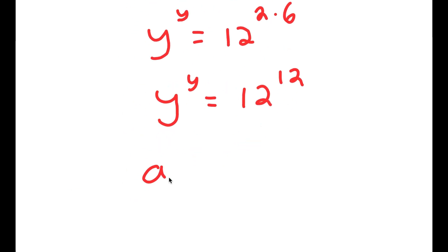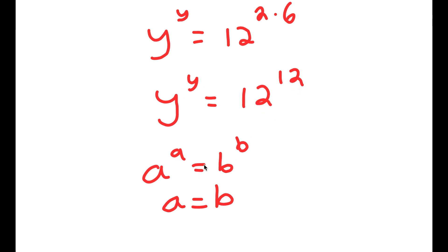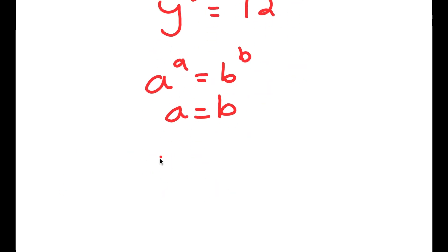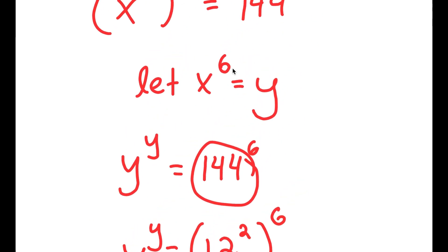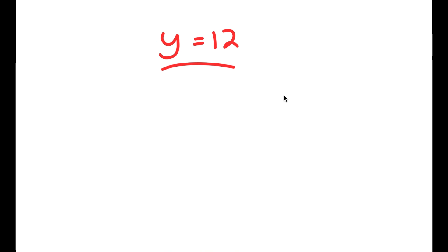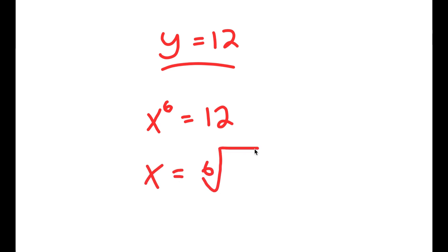If I have something in the form a to the power of a is equal to b to the power of b, then a is equal to b. So since y to the power of y equals 12 to the power of 12, y is equal to 12. And since we let x to the power of 6 equal y, I have x to the power of 6 is equal to 12, meaning x is equal to the 6th root of 12.